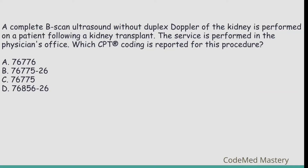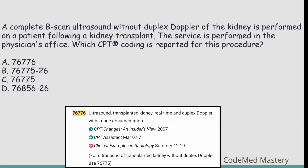Next question: A complete B-scan ultrasound without duplex Doppler of the kidney is performed on a patient following a kidney transplant, in the physician's office. Which CPT code is reported? Option A: 76776 — ultrasound, transplanted kidney, real-time and duplex Doppler with image documentation. But the question specifies without duplex Doppler.